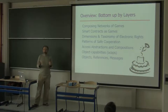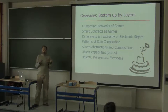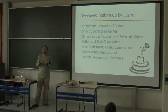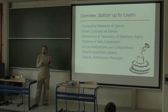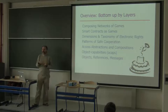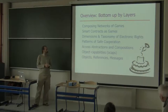A smart contract is like a familiar contract — an agreement between two or more parties that binds them to a particular framework of interaction. But a smart contract is expressed in program code for cheap machines to interpret, rather than in prose for expensive lawyers and courts.